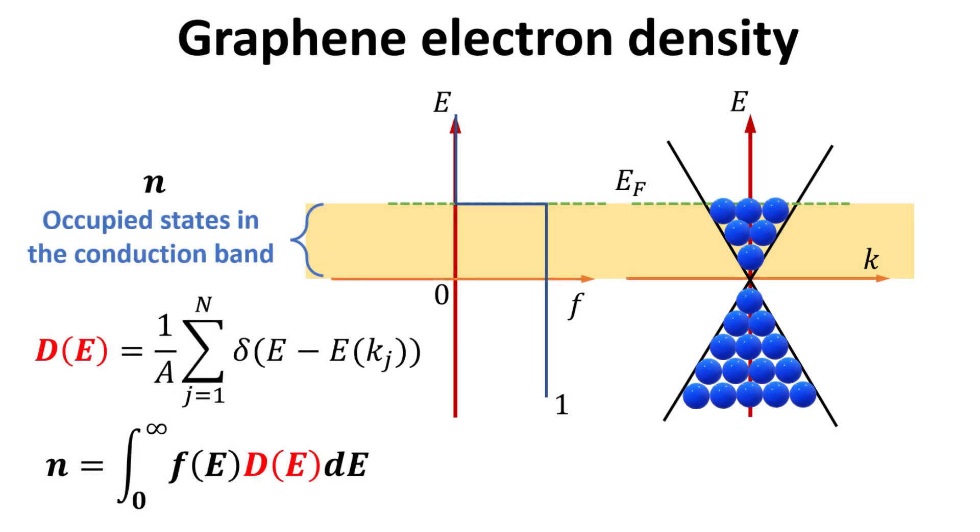Mathematically, we can define the quantity d, known as the electronic density of states, which measures the number of electronic states at each energy per unit area. The total electron density, n, is then given by weighing the density of states, d, with the electron occupation, f, integrated over the conduction band.